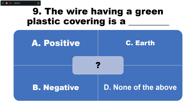Question number nine: The wire having a green plastic covering is — option A: positive charge wire, B: negative charged wire, C: earth wire, D: none of the above. The correct answer is option C — the wire with green plastic covering is the earth wire.